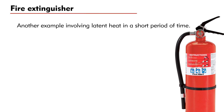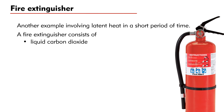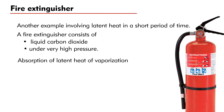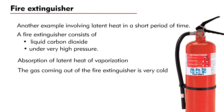Another phenomenon involving latent heat in a short period of time is the fire extinguisher. A fire extinguisher consists of liquid carbon dioxide under very high pressure. Under standard atmospheric pressure, carbon dioxide is a gas; however, it can be liquefied by applying very high pressure. When a fire extinguisher is released, the liquid carbon dioxide will turn into a gas quickly. Since a change from liquid to gas requires absorption of latent heat of vaporization, it will absorb a large amount of energy from the surroundings as well as from the carbon dioxide itself. Therefore, the gas coming out of the fire extinguisher is very cold — so cold that the water vapour in air will condense into water drops immediately. This explains why mist is often observed when a fire extinguisher is used.